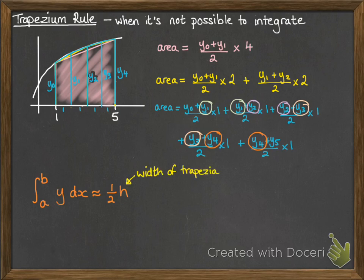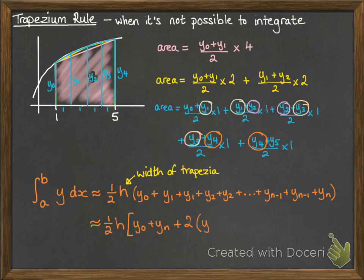And then we multiply it by all of our y lengths. Now we can make that a little tidier by collecting together the things that get repeated twice or used twice. So the first and the last one are only used once since they're the end points of our trapezium, and all the middle ones get used twice.